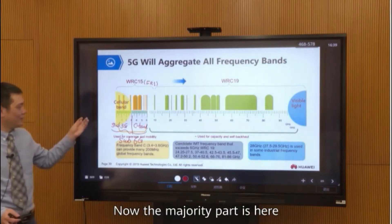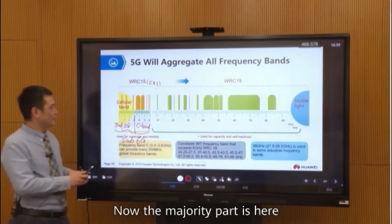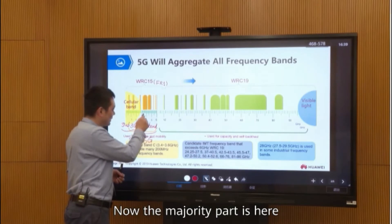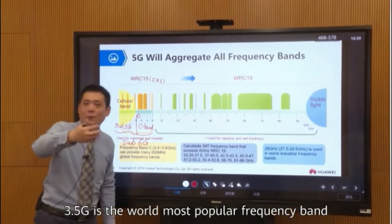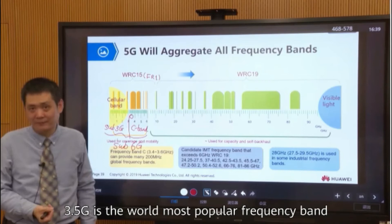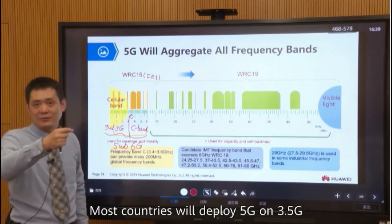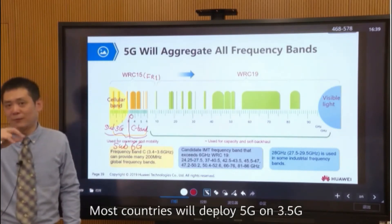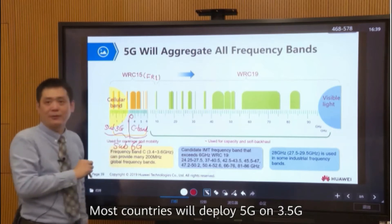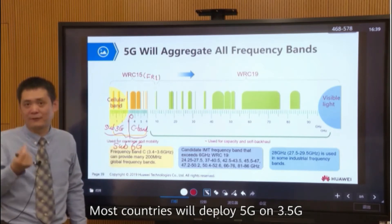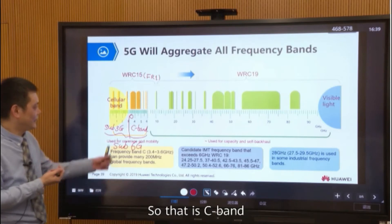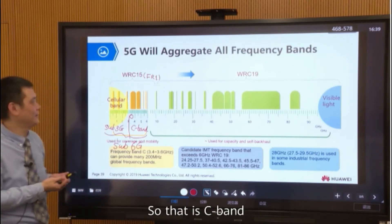The majority part here is that 3.5 GHz is the world's most popular frequency band. Most countries will deploy 5G on 3.5 GHz, and that is the C-band.